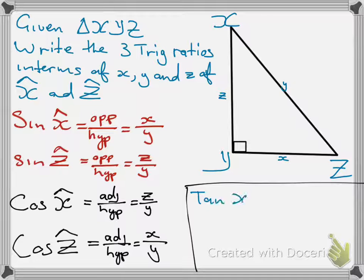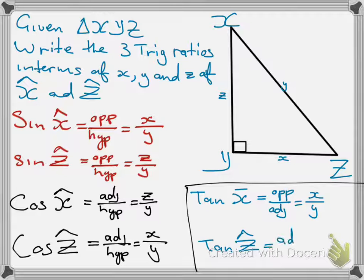Moving on to the third trig ratios, which is tan. So, you will find the tan of angle X will be opposite over adjacent. So, here we use, remember, you can use the acronym, SOHCAHTOA or Sokatoa, depending on which one is working for you. So, it's opposite over adjacent and it's X all over Z. Then, tan of angle Z is going to be Z all over X. So, that is very easy. Just applying the trig ratios and you will be good to go.